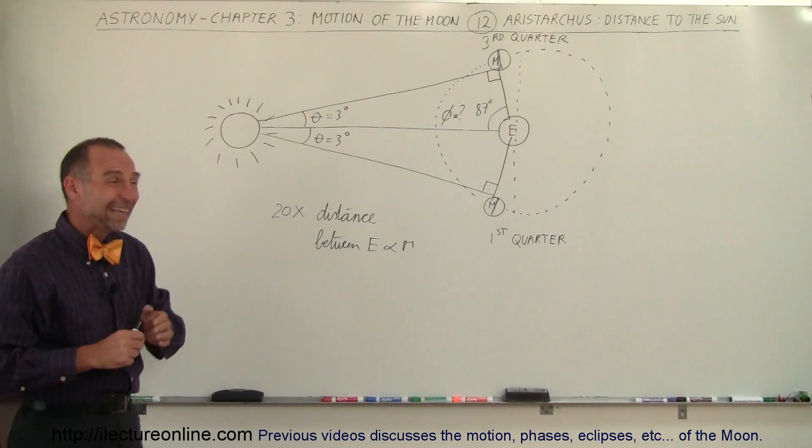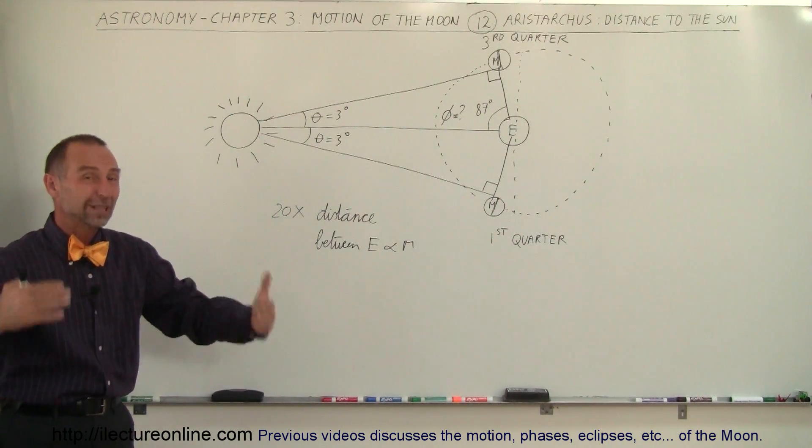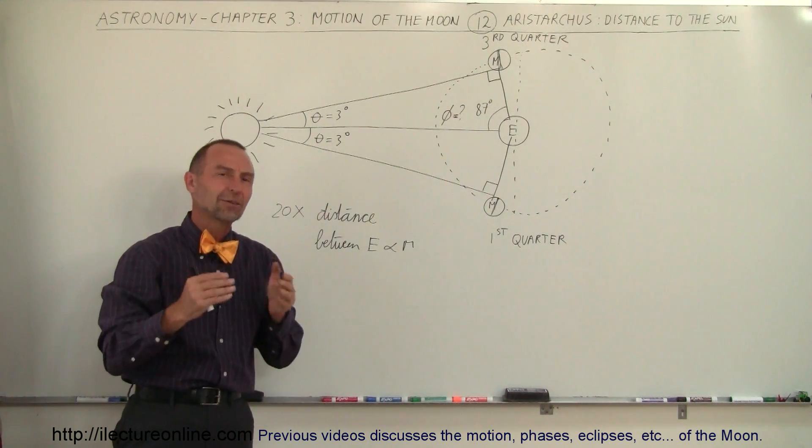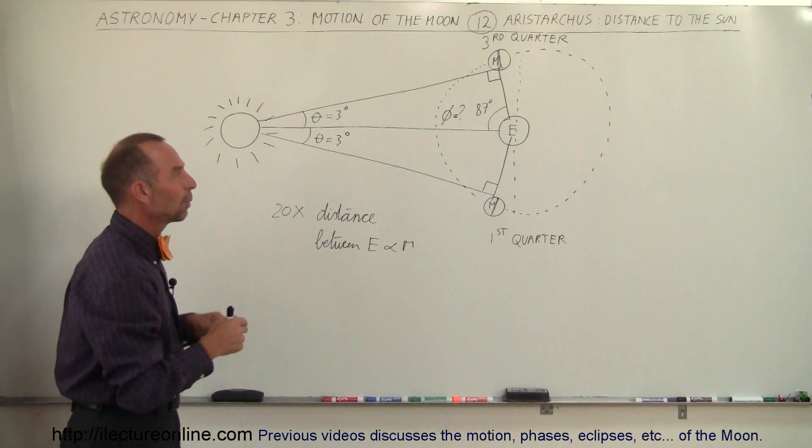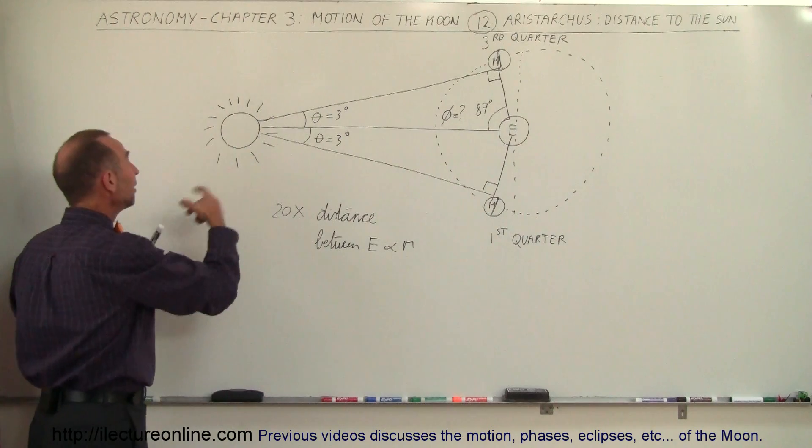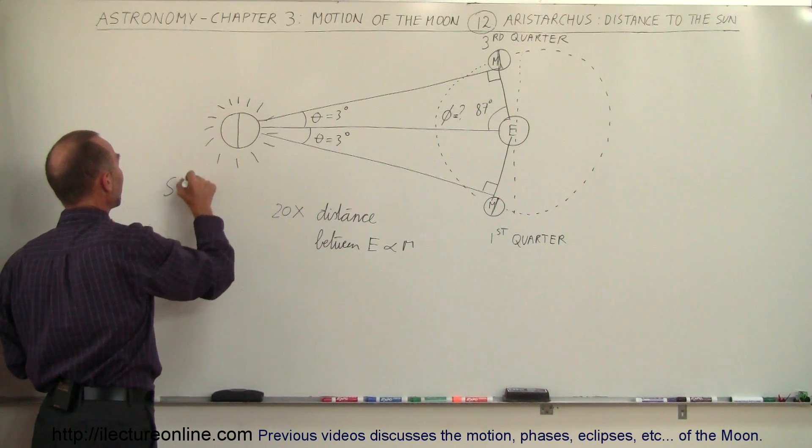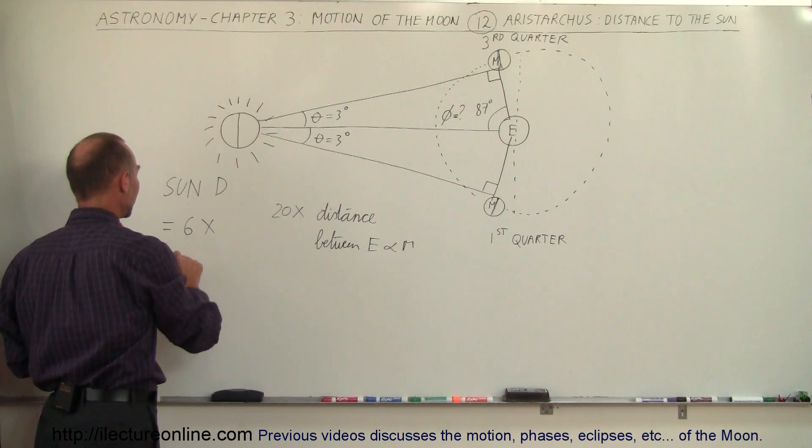What that meant was he figured out that the distance to the sun was much, much farther—20 times as far as the distance from the earth to the moon. Then, based upon the size of the moon and the relative angle, or what we would call the angular size of the moon and the angular size of the sun, he figured out that the diameter of the sun was equal to six times the diameter of the earth.